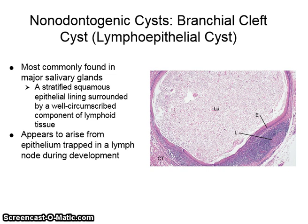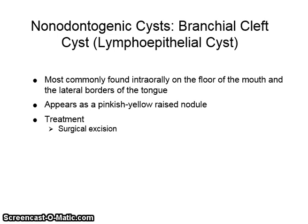The branchial cleft cyst, or lymphoepithelial cyst, is most commonly found in major salivary glands. It is a stratified squamous epithelial lining surrounded by a well-circumscribed component of lymphoid tissue, and appears to arise from epithelium trapped in a lymph node during development. It is most commonly found intraorally on the floor of the mouth and the lateral borders of the tongue, appearing as a pinkish-yellow raised nodule. It is also treated with surgical excision.